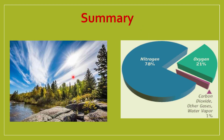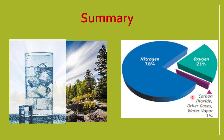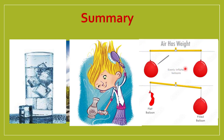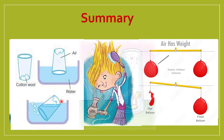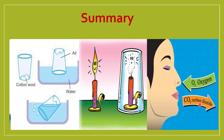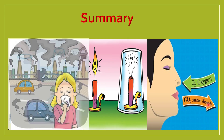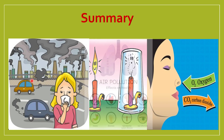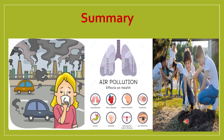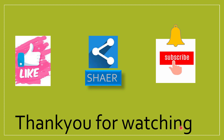In summary, this lesson covered atmosphere, what air contains, humidity, properties of air (no colour, has weight, occupies space), uses of air for burning and breathing, the presence and balance of oxygen and carbon dioxide in air, air pollution and its causes, effects of air pollution on our body, and how to reduce air pollution by planting trees and other methods. Thank you for watching. Please like, share, and subscribe to the channel, and press the bell icon to get the latest updates.